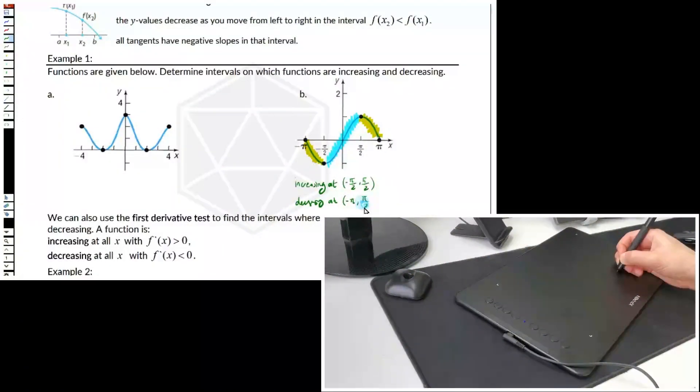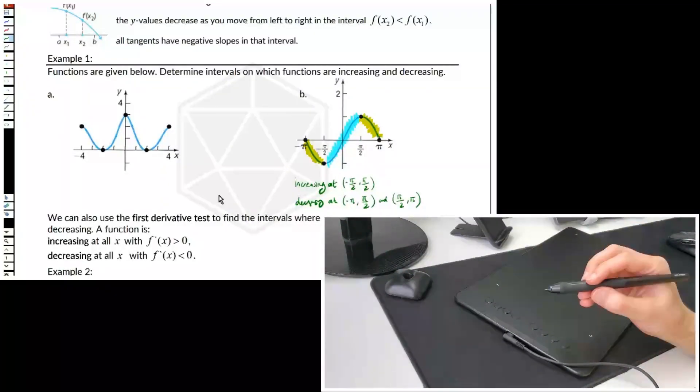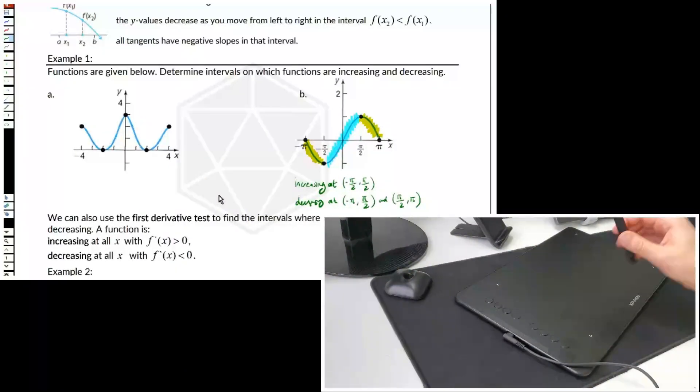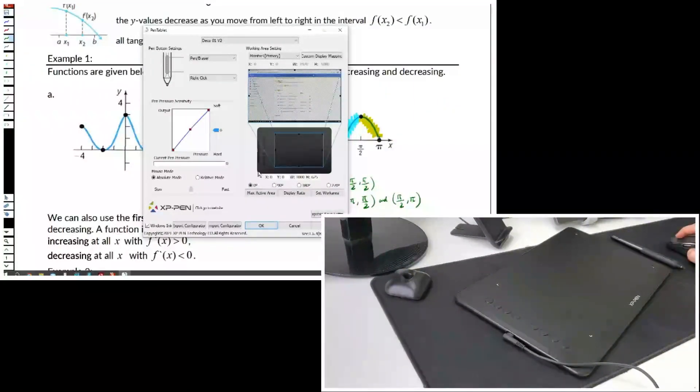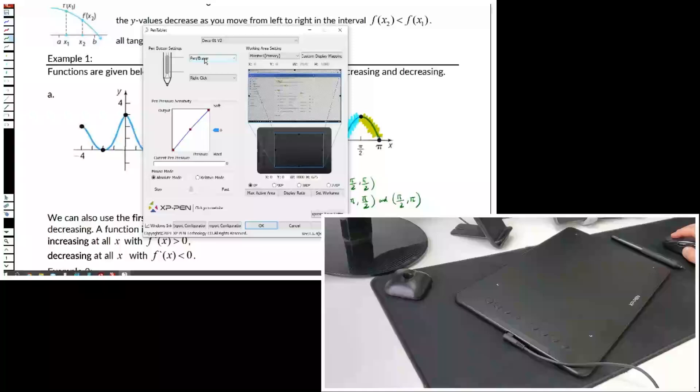Again, the tablet works everywhere a mouse works. There are also some buttons on the pen, and assigning them will help you access writing tools faster. To do that, you need to download XP-Pen pen tablet software, and here it is. You can download it from XP-Pen.com.